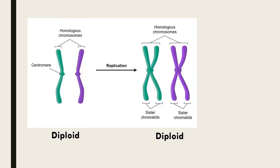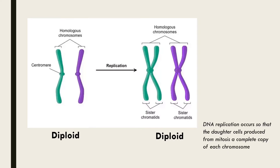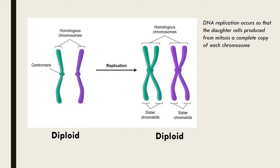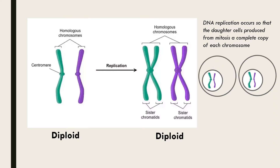So why do the chromosomes duplicate their DNA? DNA replication occurs during the S phase of the cell cycle before mitosis. The reason why it occurs is so that the two daughter cells produced from mitosis both contain a complete copy of each chromosome. If the chromosomes were not composed of two easily separated sister chromatids, the chromosomes would not be properly separated and daughter cells could end up with an incomplete copy or no copy at all of particular chromosomes.